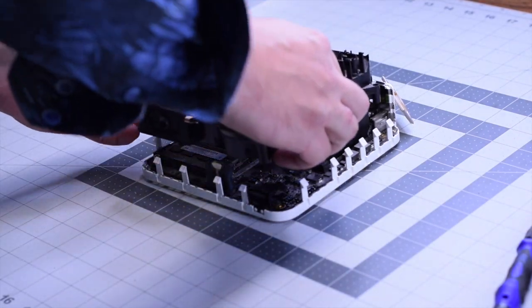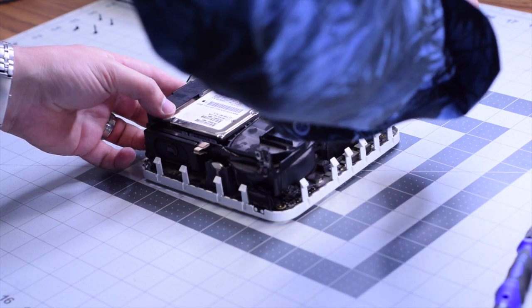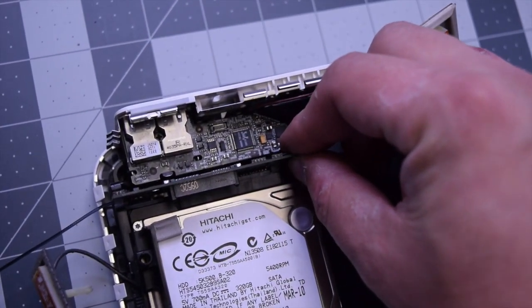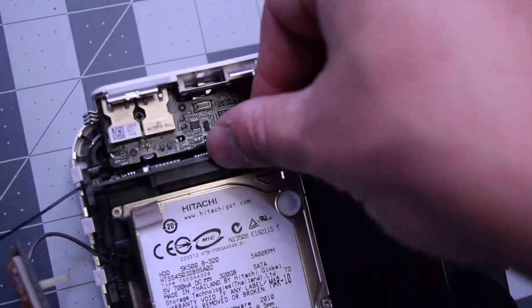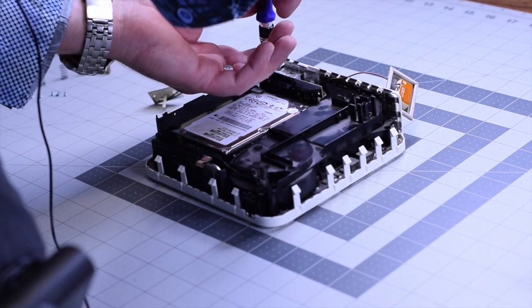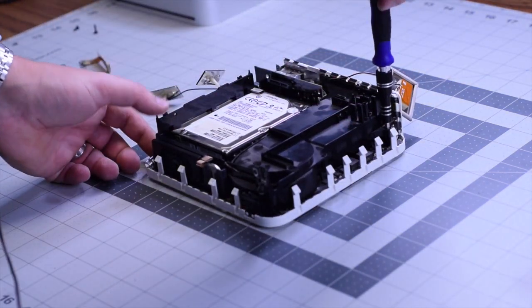Now let's put the hard drive bracket back over it. Make sure that you have enough antenna slack for all of the antennas to reach the places where they get clipped in. Make sure to check that that connection bridge is plugged into the logic board and you have a nice and solid connection. Secure it with the four Phillips head screws.